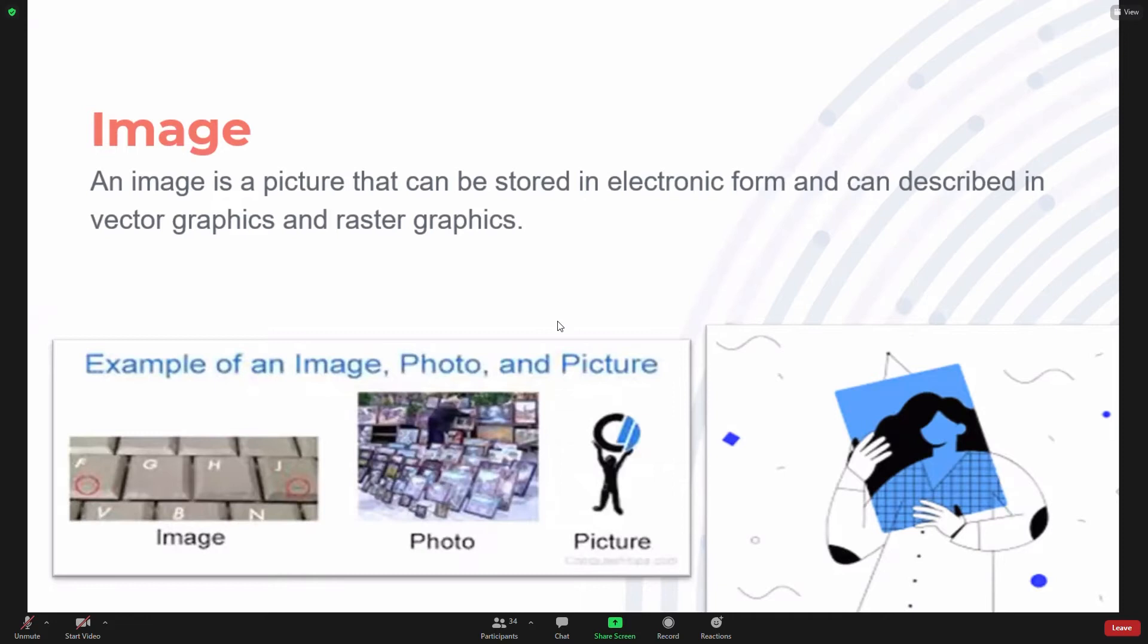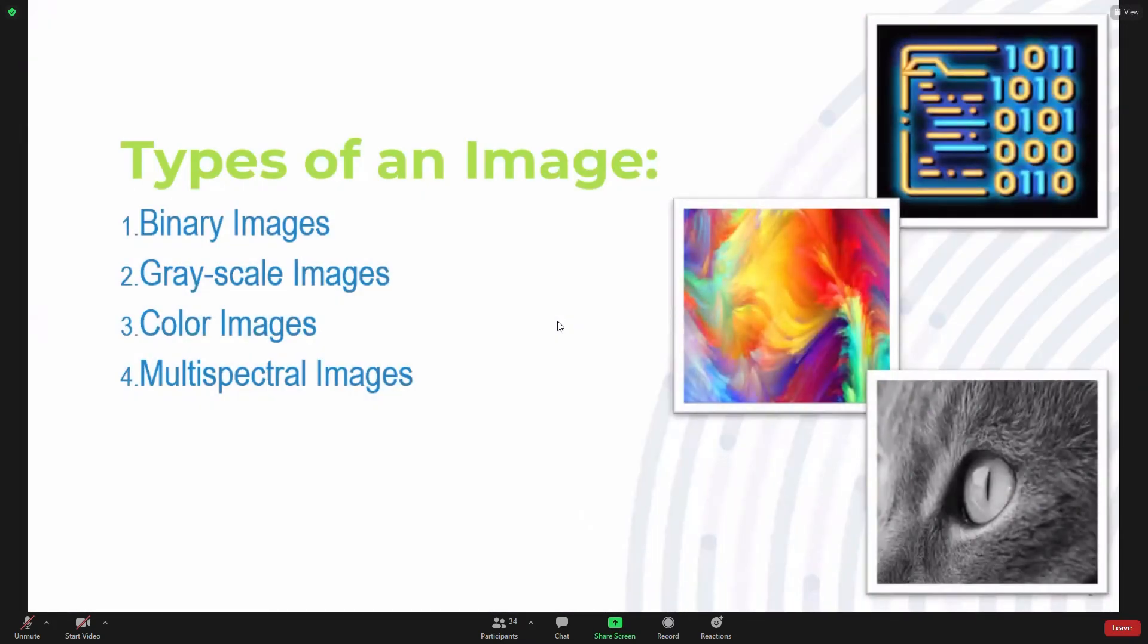Image. An image is a picture that can be stored in electronic form and can be displayed in vector graphics and raster graphics. We can also describe an image as a 2D function f(x,y), where x and y are coordinates of a graph. There are four types of images: binary image, grayscale image, color image, and multispectral image.